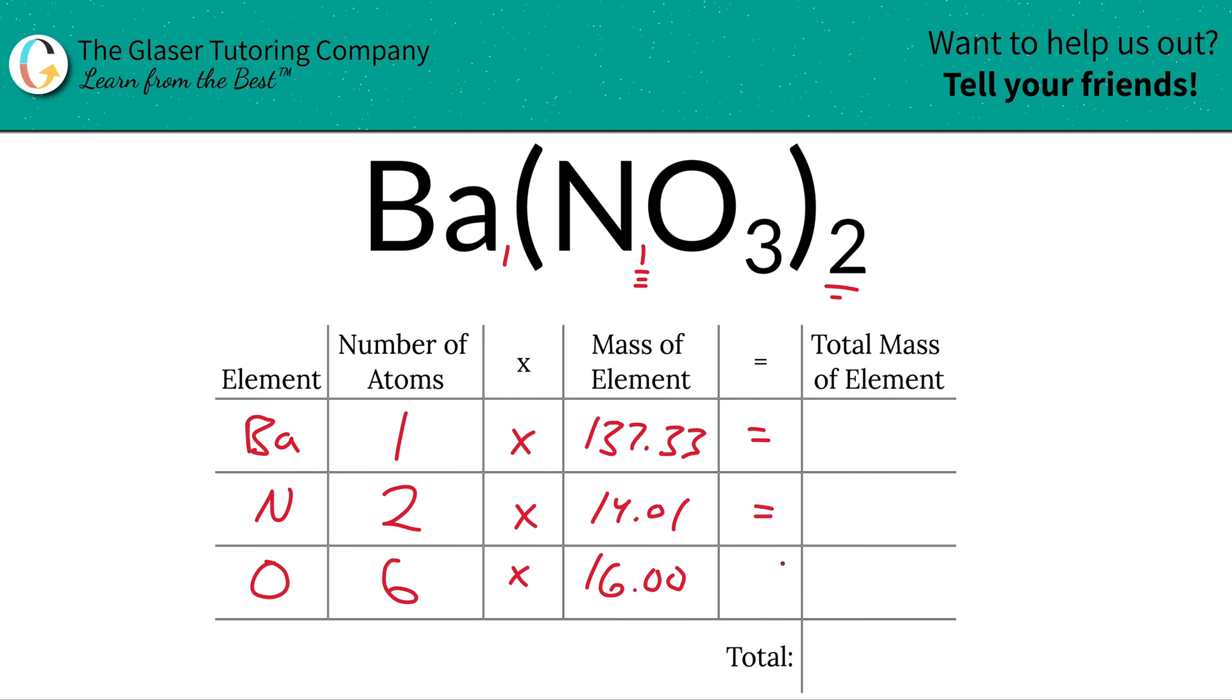So then all we have to simply do is multiply this row, basically, right? The mass of barium multiplied by one barium should give us the total mass of then barium of 137.33. The total mass now of nitrogen in the compound, each nitrogen is 14, right? Multiply by two. This should be about 28.02.